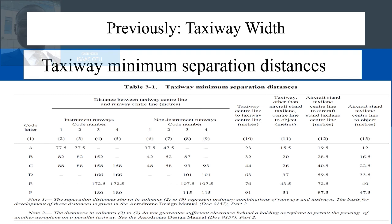Also, the minimum separation distances provided by Annex 14 are broken down into various categories: taxiway centerline to runway centerline, taxiway centerline to another taxiway centerline, or two objects. These are all broken down depending on the code letter of the aircraft or the runway in use.